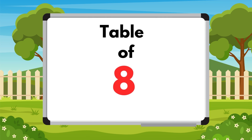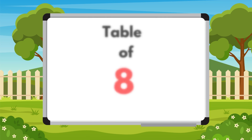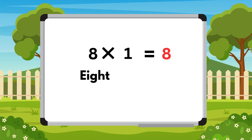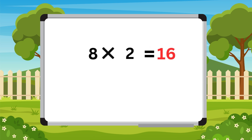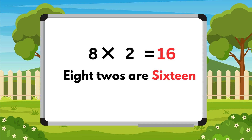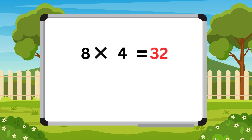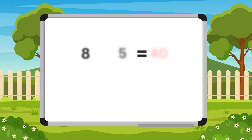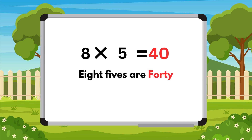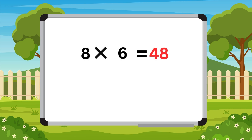Table of eight. Eight one is eight. Eight twos are sixteen. Eight threes are twenty-four. Eight fours are thirty-two. Eight fives are forty. Eight six are forty-eight.